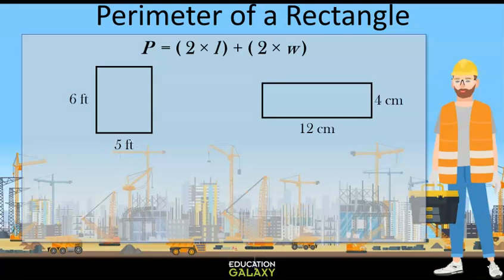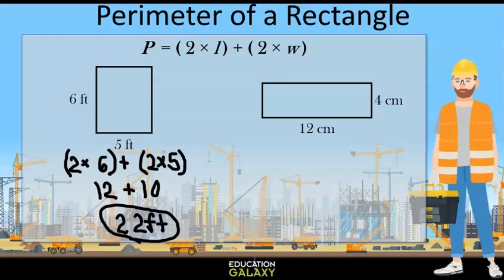Let's look at our first rectangle for example. The length is 6 and the width is 5 so we would have 2 times 6 plus 2 times 5. That gives us 12 plus 10 which is 22 so our answer is 22 feet.